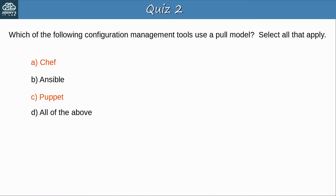Question 3: Which of the following configuration management tools use a client-server model? The answer is D, all of the above. In this video I didn't explicitly state that Ansible, Puppet, or Chef use a client-server model, but in describing their operations I mentioned servers and clients.